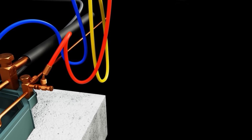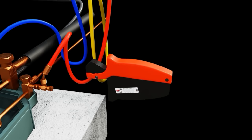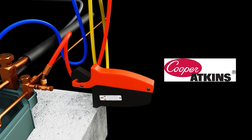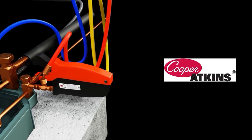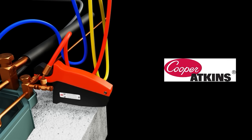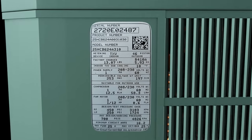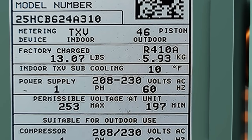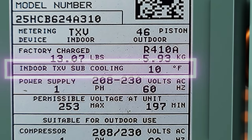Next, we're going to go ahead and put a line temperature clamp on the liquid line. Here we show a Cooper Atkins self-contained line temperature clamp. This is a tool that I've used for a really long time. It's very effective and compact. We're going to take a look at our data tag, and we're going to identify where it shows 10 degrees of indoor TXV subcooling.